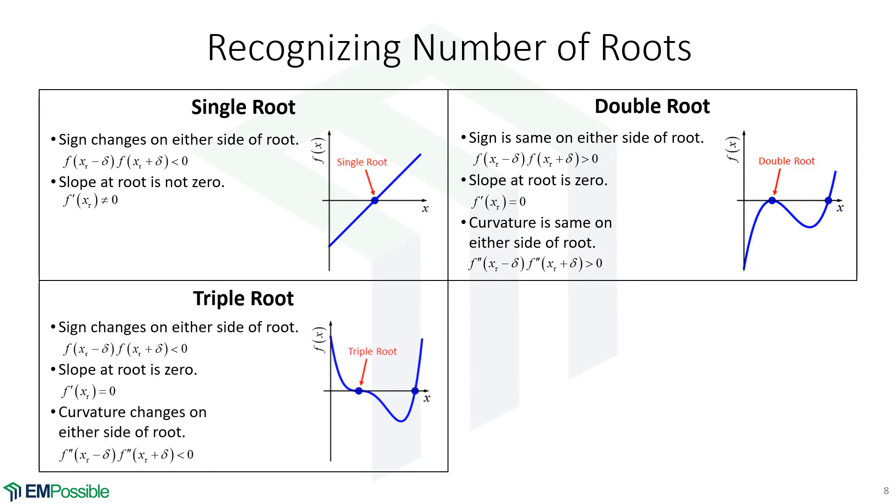Onto the triple root. We're back to the function changing sign on either side of the triple root, very much like the single root. However, slope is zero. Whereas for the single root, that slope was not zero. So the function changing sign, the slope being zero. And the third condition is that the curvature is also opposite on both sides, where our curvature is upward and on the right-hand side, the curvature is downward. So the second order derivative has to change sign. If we multiply the second order derivative before the root and after the root, we'll have a negative number if it changes sign.